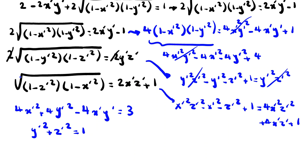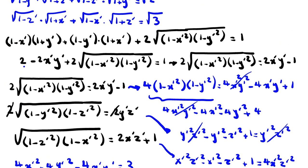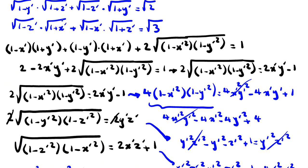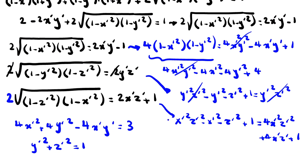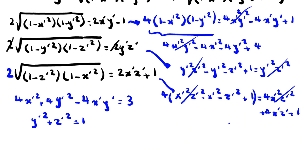We had forgotten a factor of 2, so we should multiply by 4 accordingly. After canceling the 4x'^2z'^2 terms, we confirm the third equation is: 4x'^2 + 4z'^2 + 4x'z' = 3. So our three key equations are: 4x'^2 + 4y'^2 - 4x'y' = 4; y'^2 + z'^2 = 1; and 4x'^2 + 4z'^2 + 4x'z' = 3.